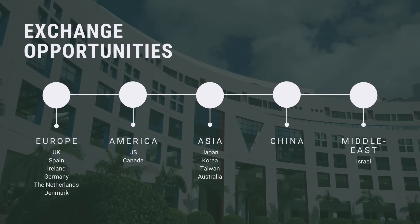Students can also opt for exchange studies for at least one semester. On top of the many exchange partners that HKUST has, our school has many prestigious partner institutions in other parts of the world, like UCLA, University of Virginia, Sciences Po in Paris, Peking University, and more. We believe that overseas experience can enrich students in many different ways.